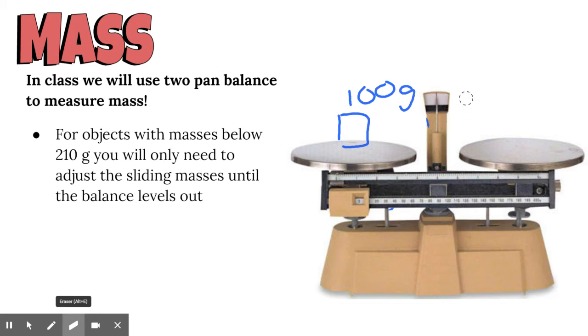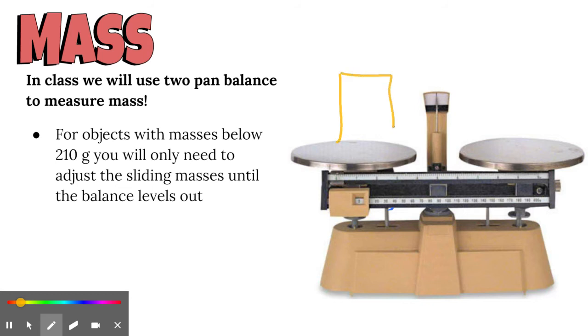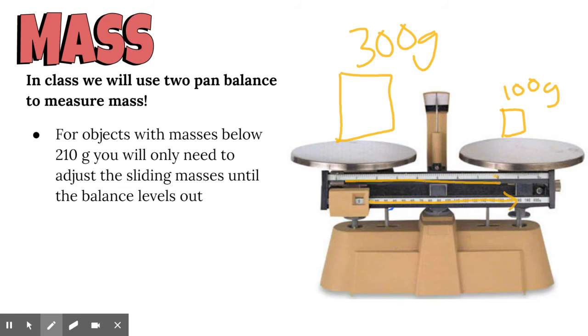Our sliding masses only go up to 210 grams. What do we do if we have something bigger? If we have a really big object with lots of mass, say 300 grams, we use something called a counter mass. These are objects that we know the exact mass of. We might put a 100 gram mass on this side to help balance, then adjust the sliders until our arrow and needle balance out again.